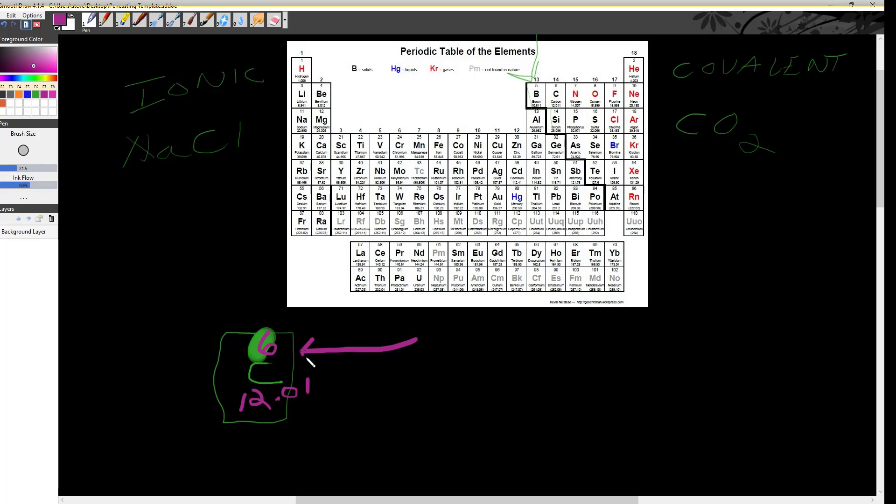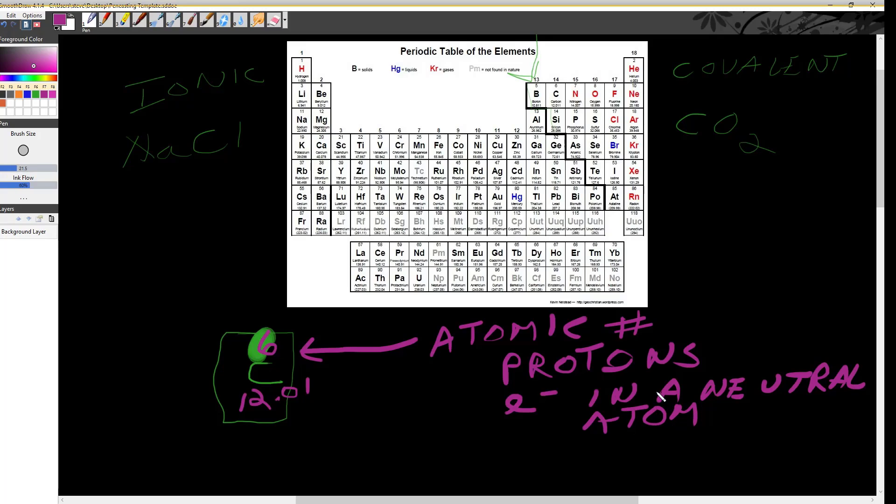The number on the top is the atomic number. That is the number of protons. The number of protons in the element is the element. It's like a social security number. It's also the number of electrons in a neutral atom. So if I got an atomic number of 6, that also means I got 6 electrons.